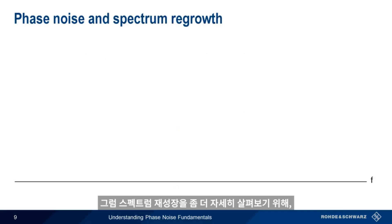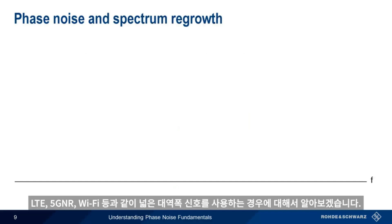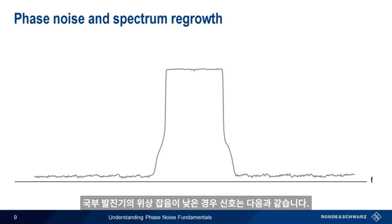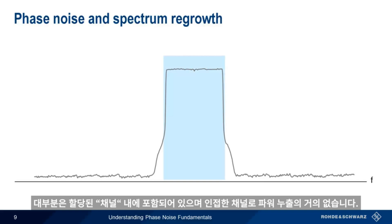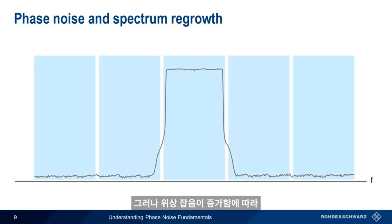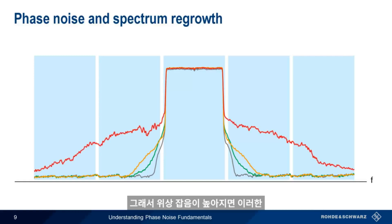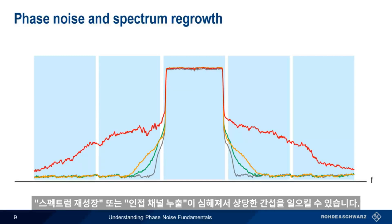Let's look a little bit more closely at phase noise and spectral regrowth, this time with a wider bandwidth signal, such as the kind used in LTE, 5G NR, Wi-Fi, etc. If our local oscillator has low phase noise, the signal will be mostly contained within its assigned channel, with very little power leaking into the adjacent channels. But as the level of phase noise increases, we see the signal becoming wider and spreading further into these adjacent channels. And at high levels of phase noise, this regrowth or adjacent channel leakage can become quite severe, causing significant interference.